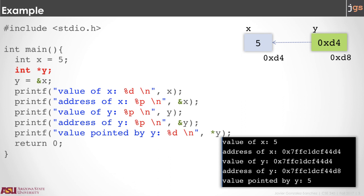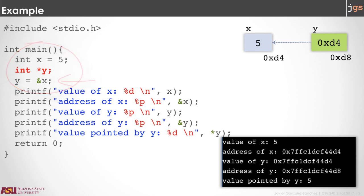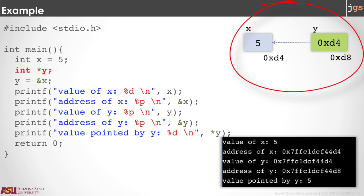Let's review a full example. Here we have a variable x that is an integer. We have y again as a pointer. And here we store the address of x in y. So what happens in the memory is something like this picture. You have the variable with the value and you have the pointer with the address of the variable. 0xd4 is the address of x and is also stored inside of y, so y is pointing to x.